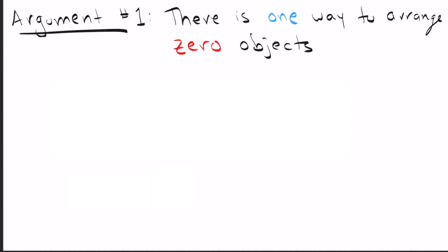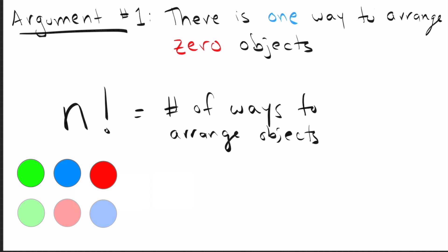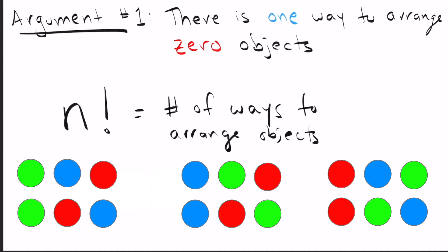The first argument says that there's only one way to arrange 0 objects. To understand this argument, we need to say something quickly about factorials. What factorial means is the number of ways to arrange n objects. For example, if you took three coins and you tried arranging them on the table, you would see that there are six different ways to arrange them, which is exactly what 3 factorial equals.